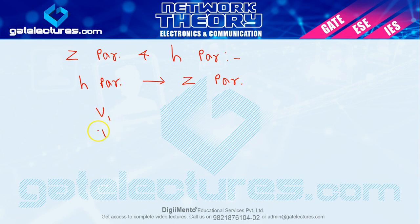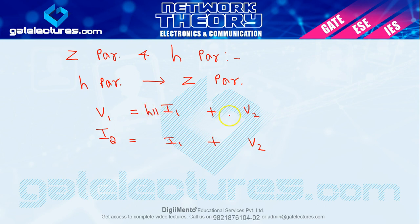The H parameter equations are: V1 = H11·I1 + H12·V2 (equation number 1), and I2 = H21·I1 + H22·V2 (equation number 2). We have now written down the H parameter equations.